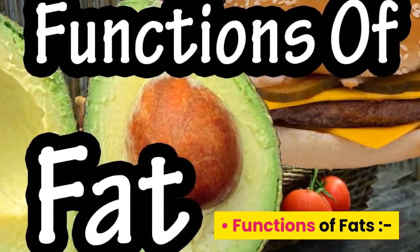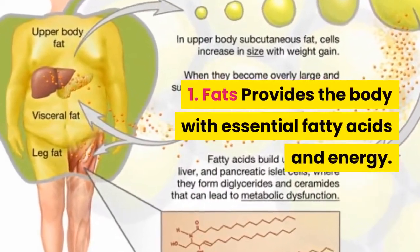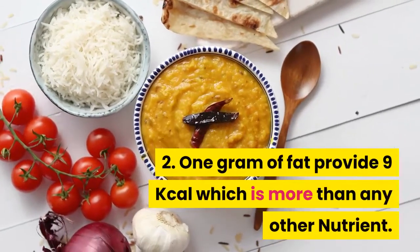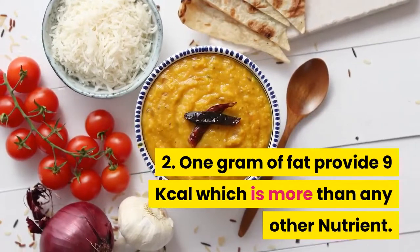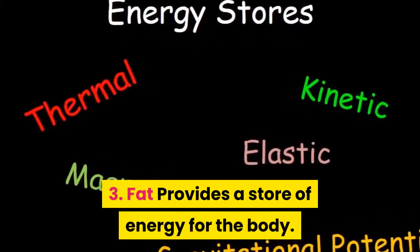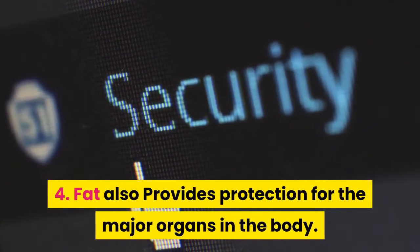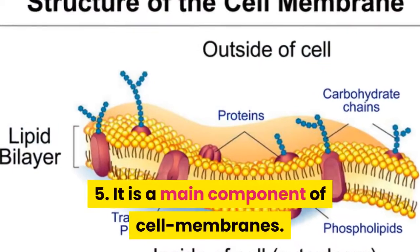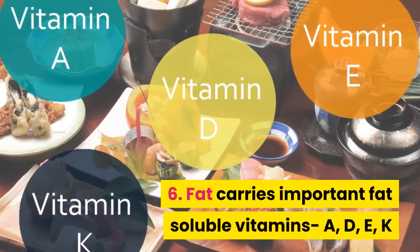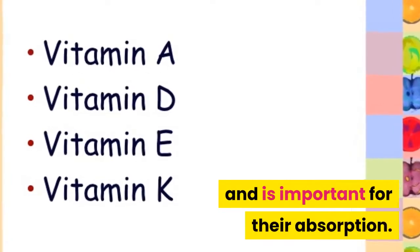Functions of fats: 1. Fats provide the body with essential fatty acids and energy. 2. One gram of fat provides 9 kilocalories, which is more than any other nutrient. 3. Fat provides a store of energy for the body. 4. Fat also provides protection for the major organs in the body. 5. It is a main component of cell membranes. 6. Fat carries important fat-soluble vitamins A, D, E, and K, and is important for their absorption.